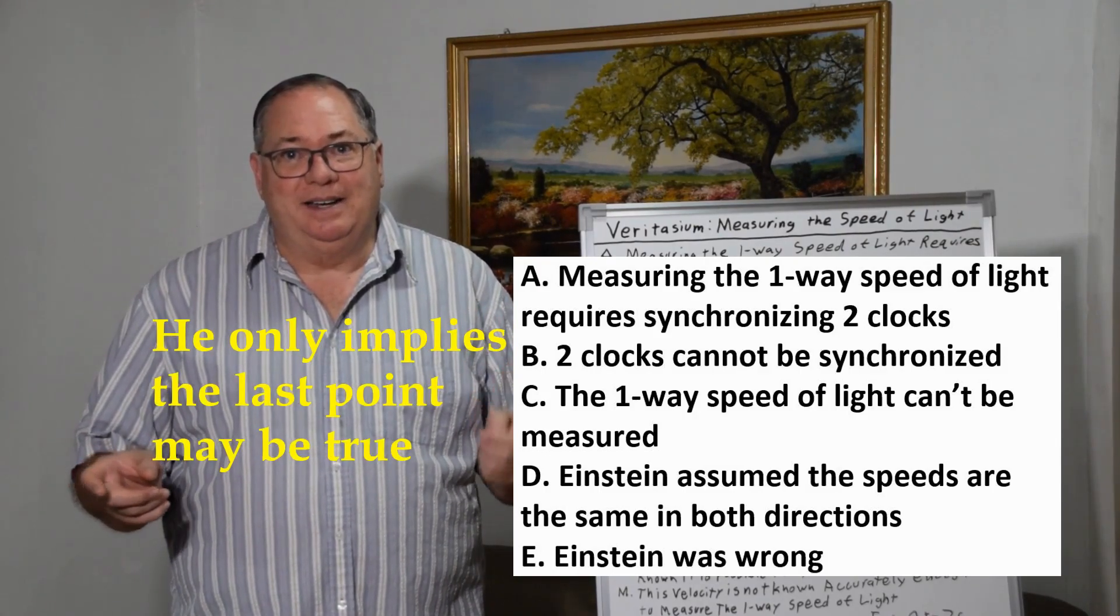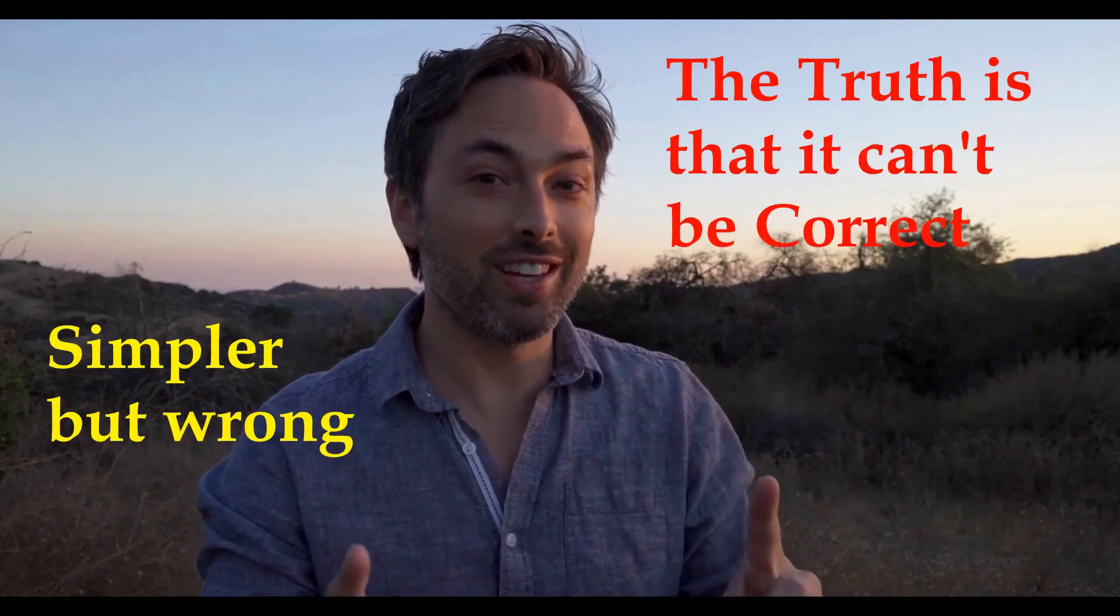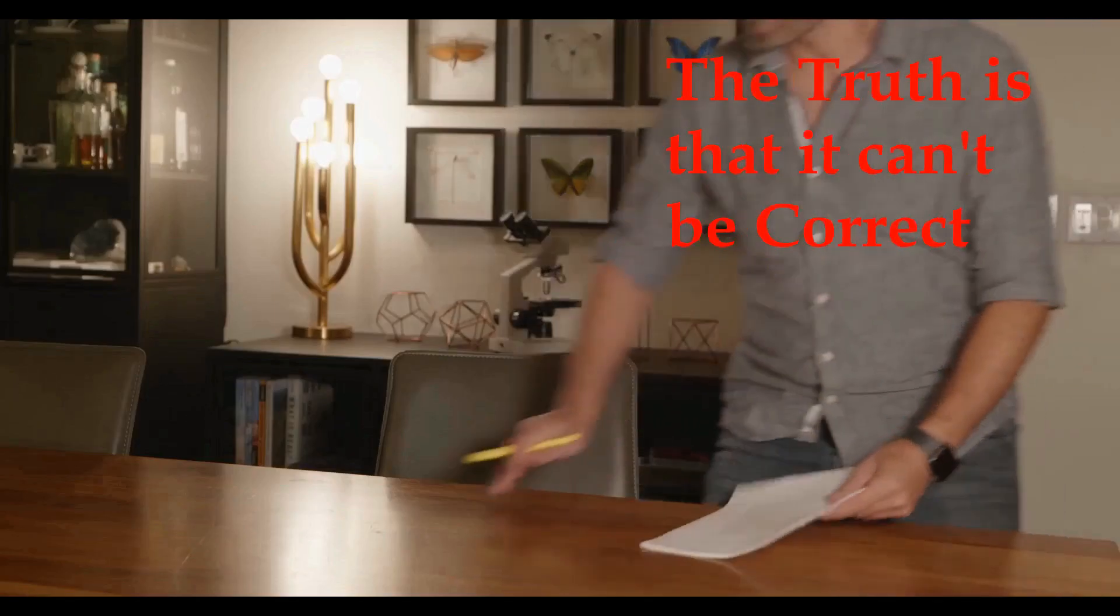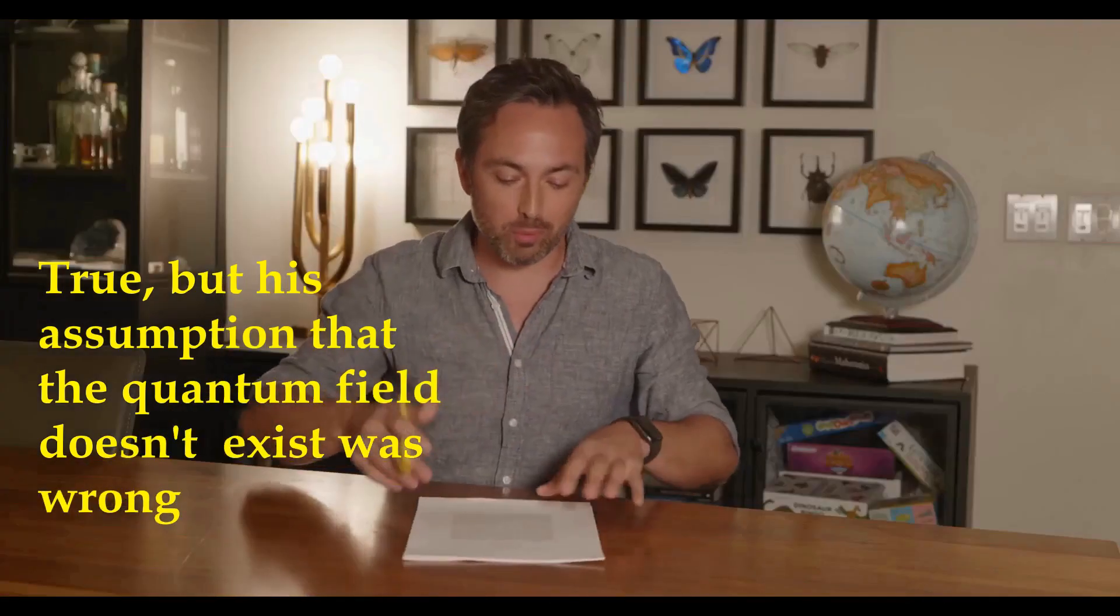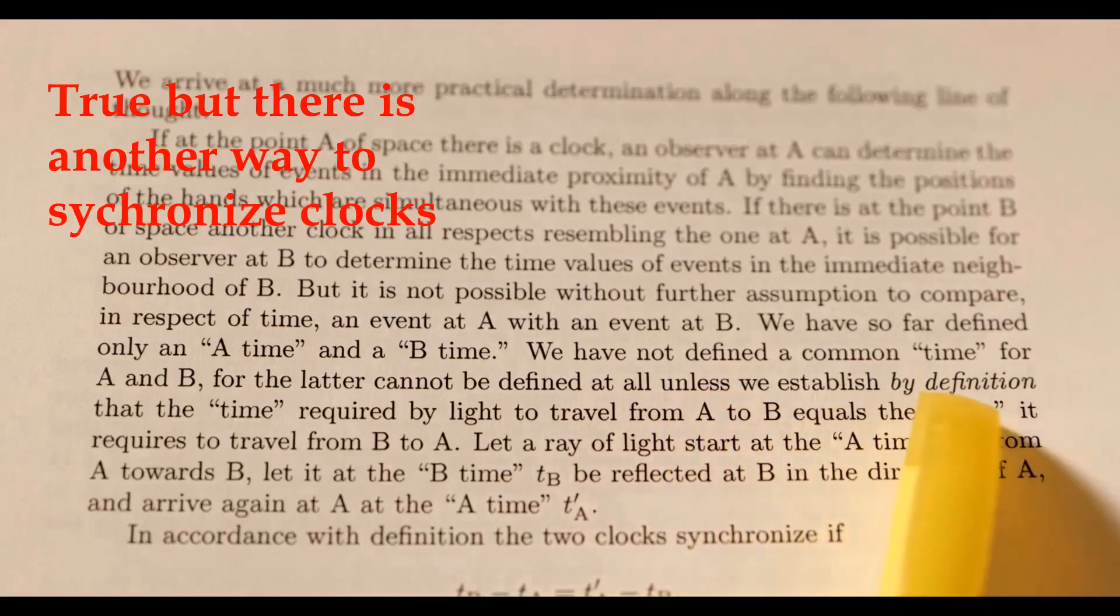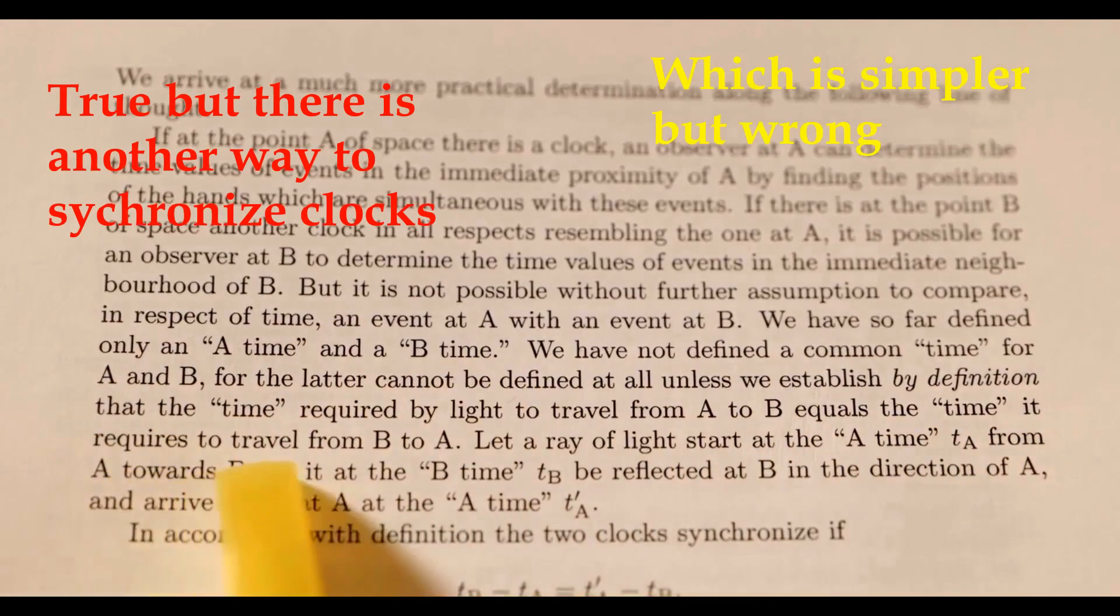As Derek says in this clip: You might think it is just simpler that light should travel at the same speed in all directions, but the truth is, that is a convention, rather than an experimentally verified fact. Einstein himself pointed this out in his famous 1905 paper on the electrodynamics of moving bodies. He spends the first couple of pages on the problem of synchronizing clocks at different locations A and B, and he says there is no way that we can meaningfully compare the times they measure unless we establish by definition that the time required by light to travel from A to B equals the time it requires to travel from B to A.